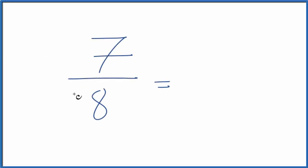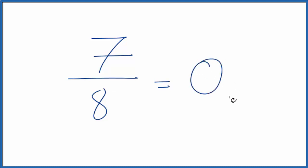Let's write seven eighths as a decimal. The first thing you'll notice: seven is smaller than eight. So our answer here is going to have to be smaller than one, less than one. So we can put zero point something. Really, when we look at this, what we're saying is we have seven divided by eight.